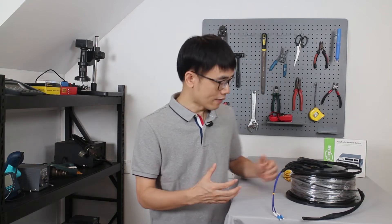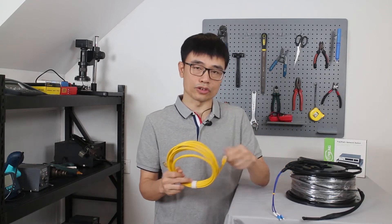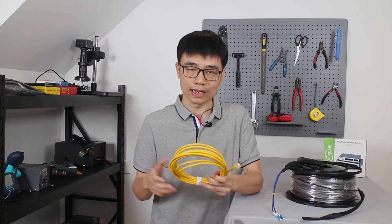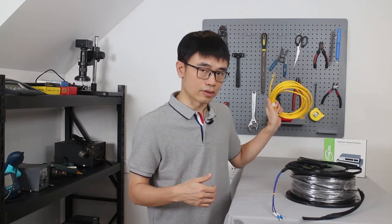But one drawback of fiber optic cable is we cannot send power through it. Unlike Cat5e or Cat6 Ethernet cable which is copper, we can inject power using PoE (Power over Ethernet) to send both power and data through a single cable, so the device gets both through one Ethernet cable.